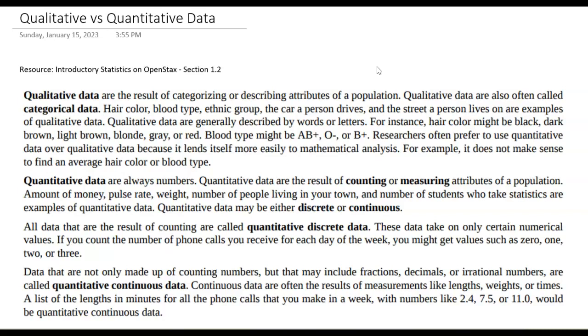Within quantitative data, we can either have discrete or continuous numbers. If it's discrete, then it's going to be essentially an integer or whole number. So 0, 1, 2, 3, if you count the number of something, it doesn't make sense to have decimal values. It's not all values on a number line that can happen.